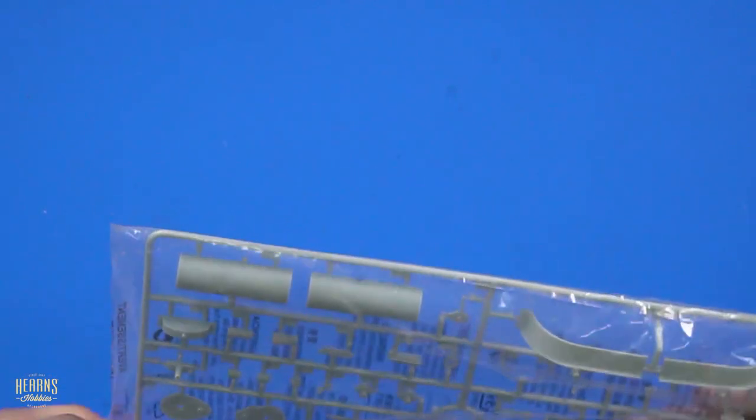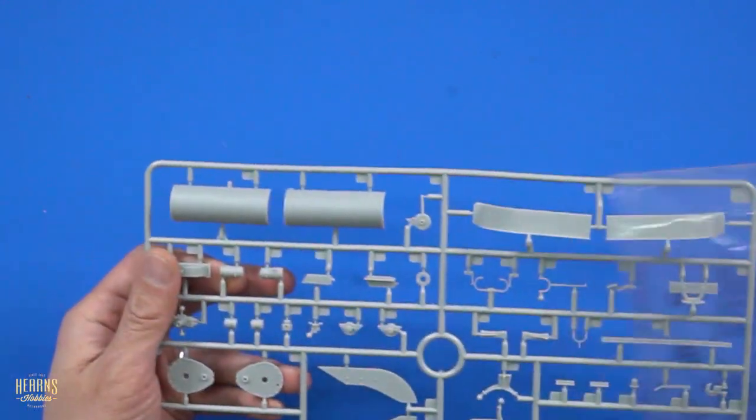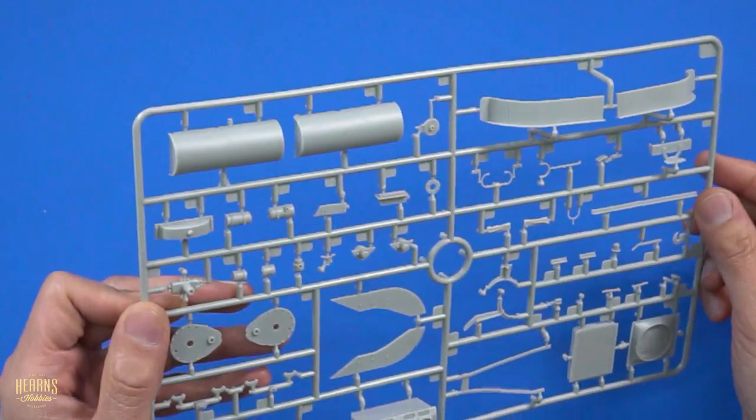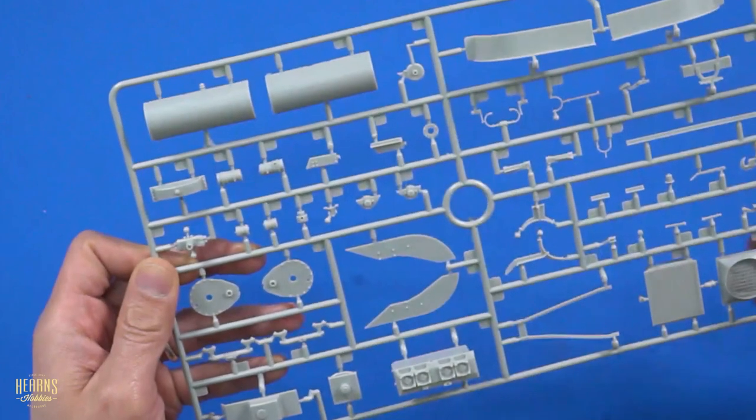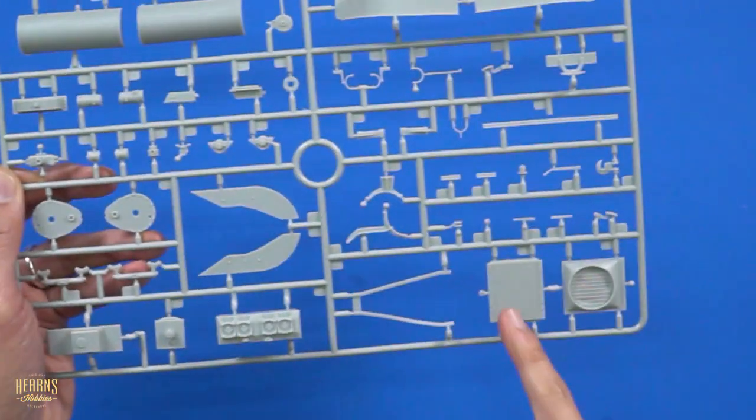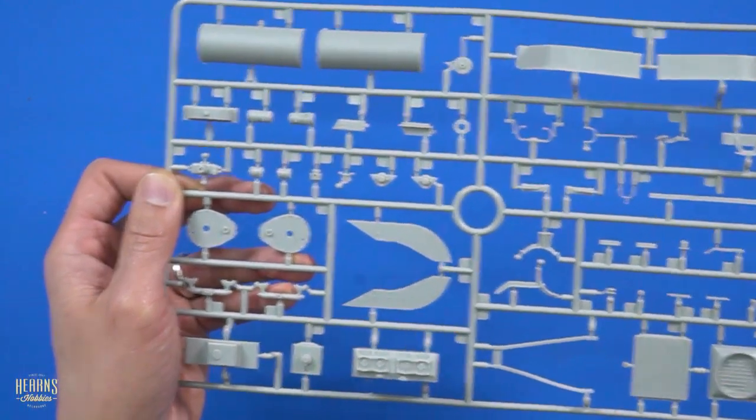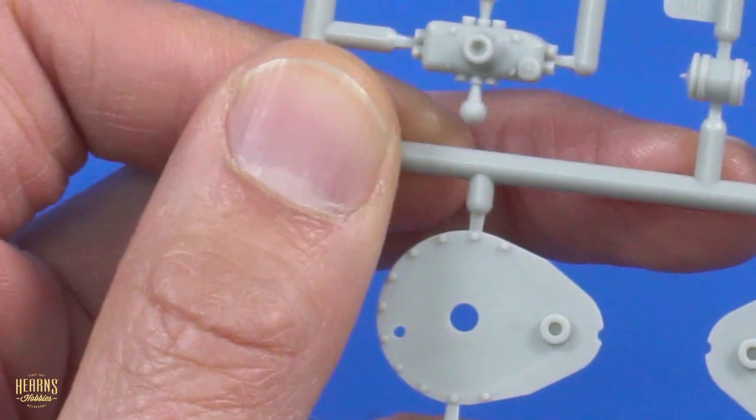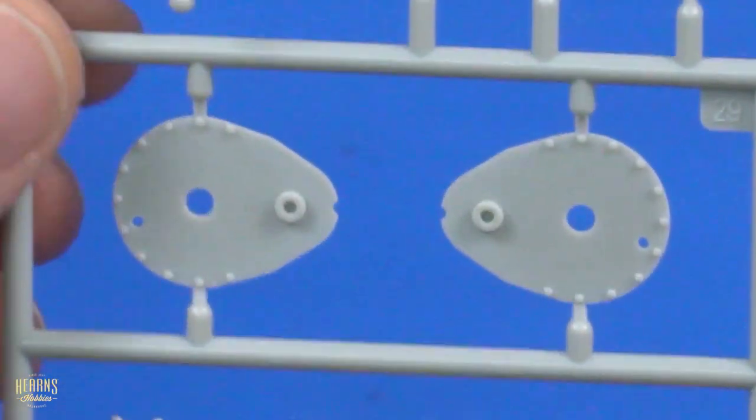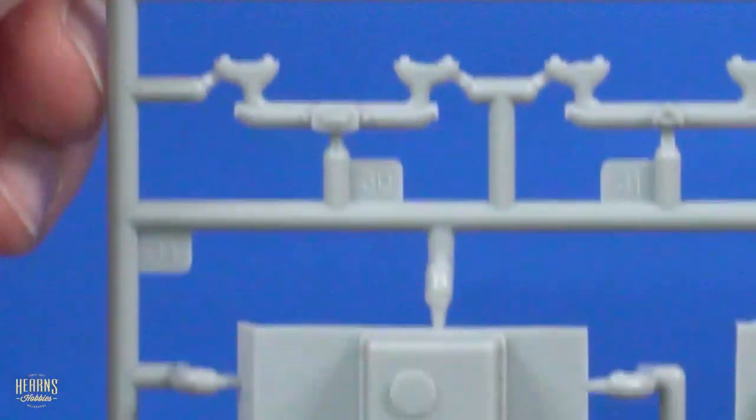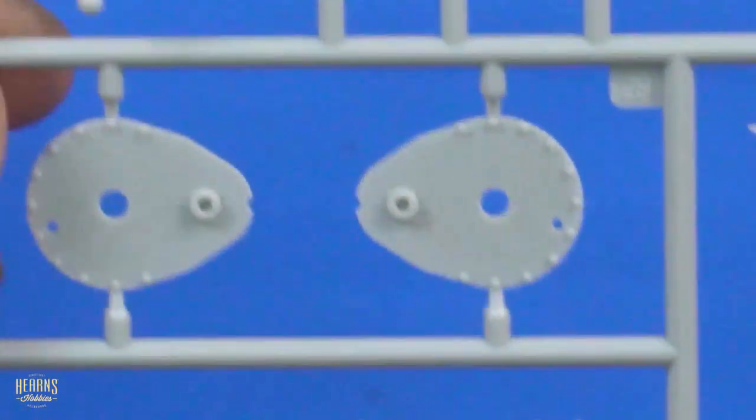And then we end up with some bigger sprues. Let's do a bit of chop. Easy fix. Some bigger parts. You've got some fenders, big chunky bit of the engine there. And you've got the big radiator that's quite pronounced at the front. So there's a side of the, I guess the gearbox for the driving sprockets.